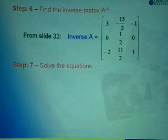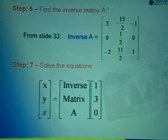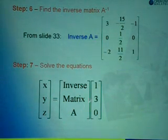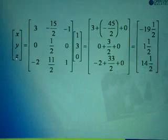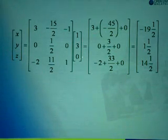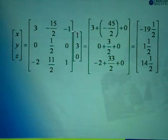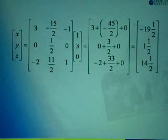To solve the equation, we use the formula: x, y, z equals the inverse matrix of A times matrix b, which is 1, 3, 0. To find x, y, z, we multiply the inverse matrix of A by 1, 3, 0. Remember, we have to use row times column. All elements in the first row times the column give the first result. The second row times the column gives the second answer. The third row times the column gives the third answer. Then it will be simplified.